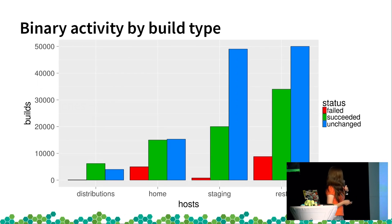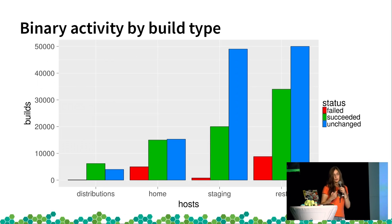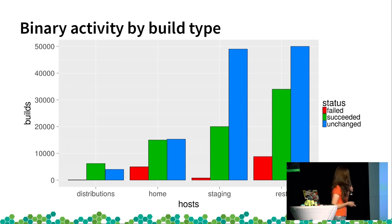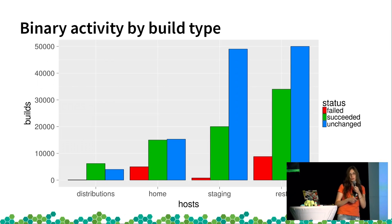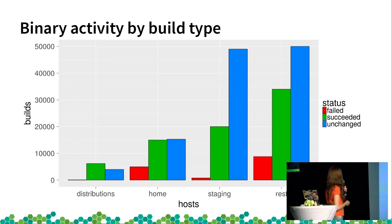Here we have the binary activity by build type. The numbers are the same ones already mentioned in total, but you can see when they fail, succeed, or are unchanged. Unchanged basically means it was built and succeeded, but the result didn't change so it was not updated. The distributions bar that seems to be zero is not zero — distributions also fail — but 98 failures compared to 50,000 is just not visible.